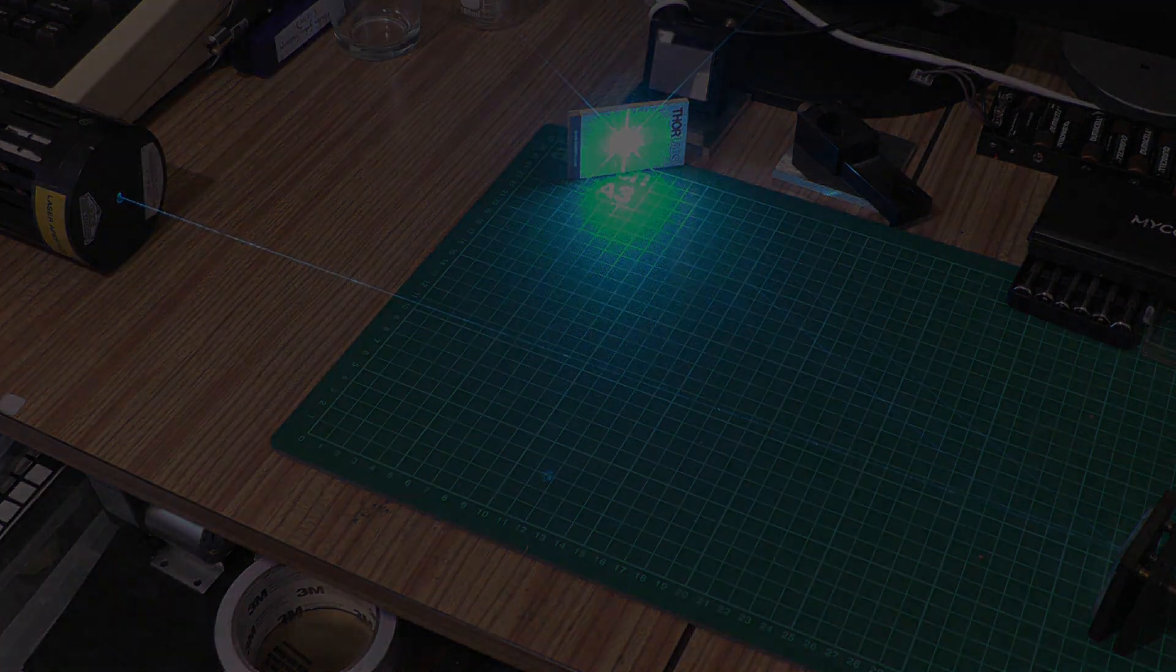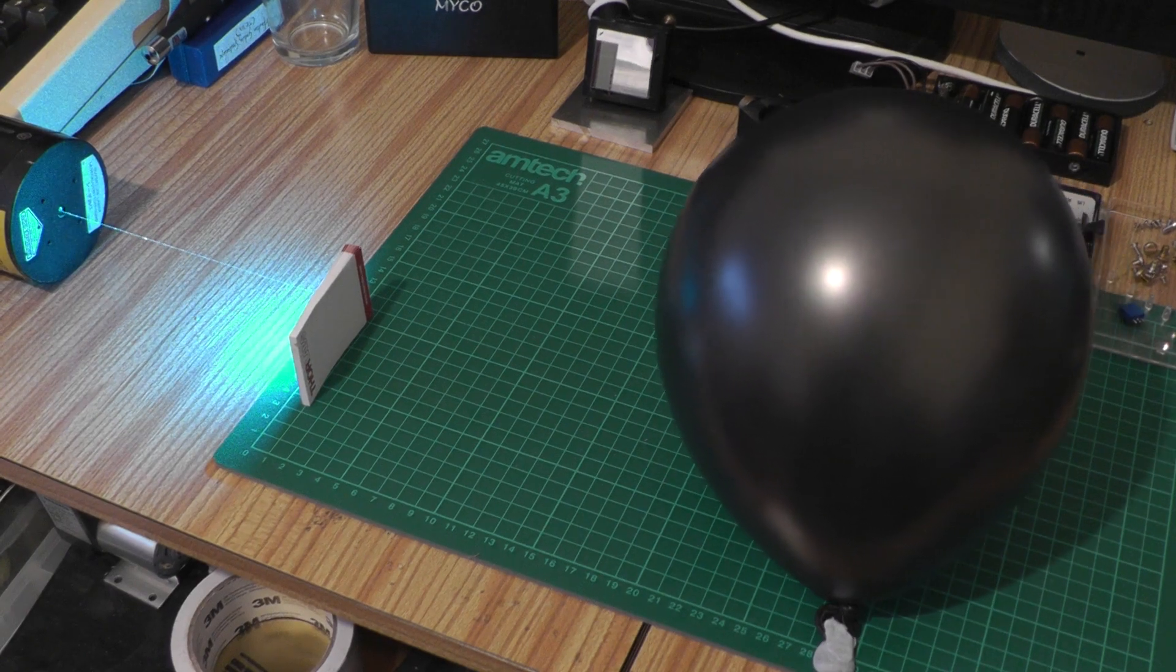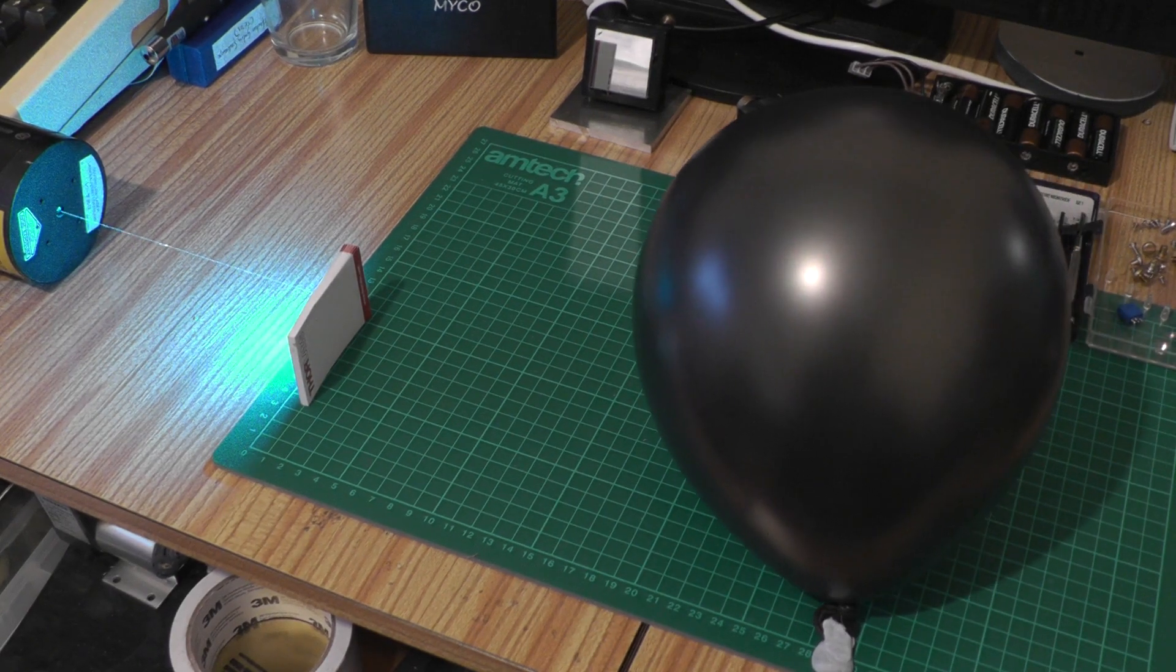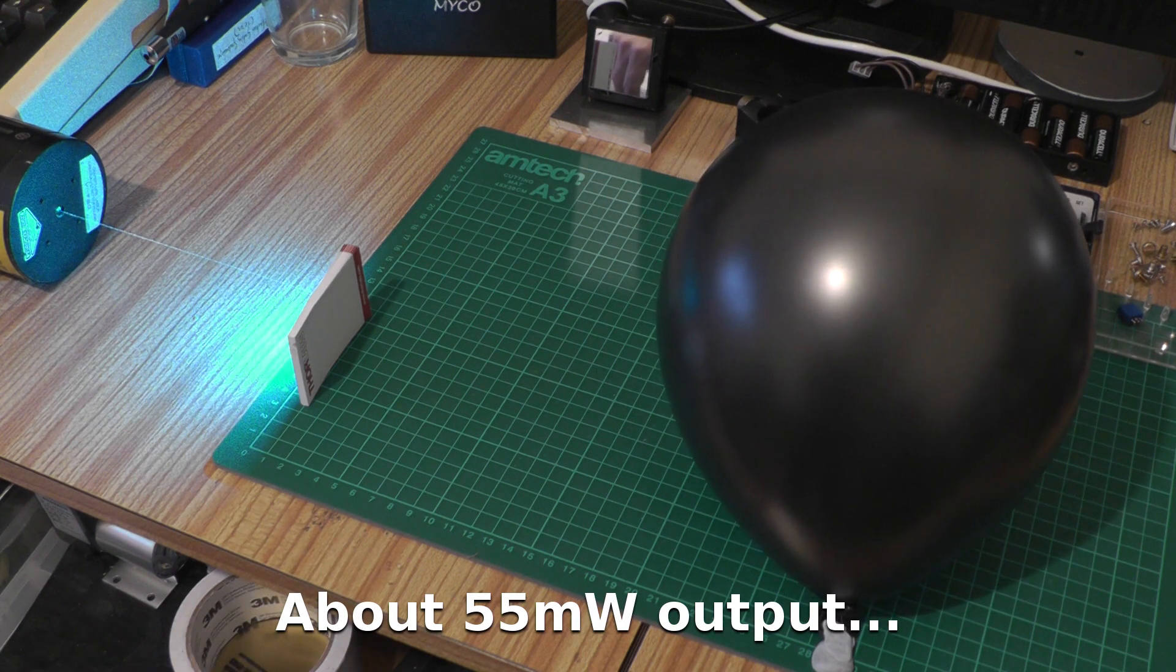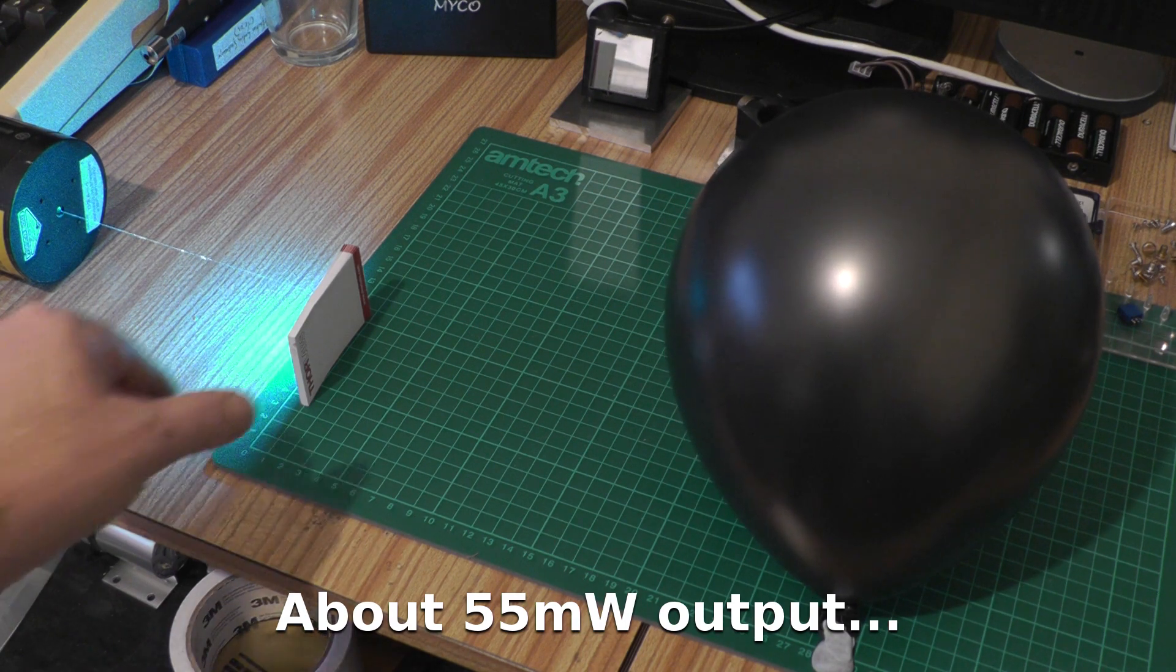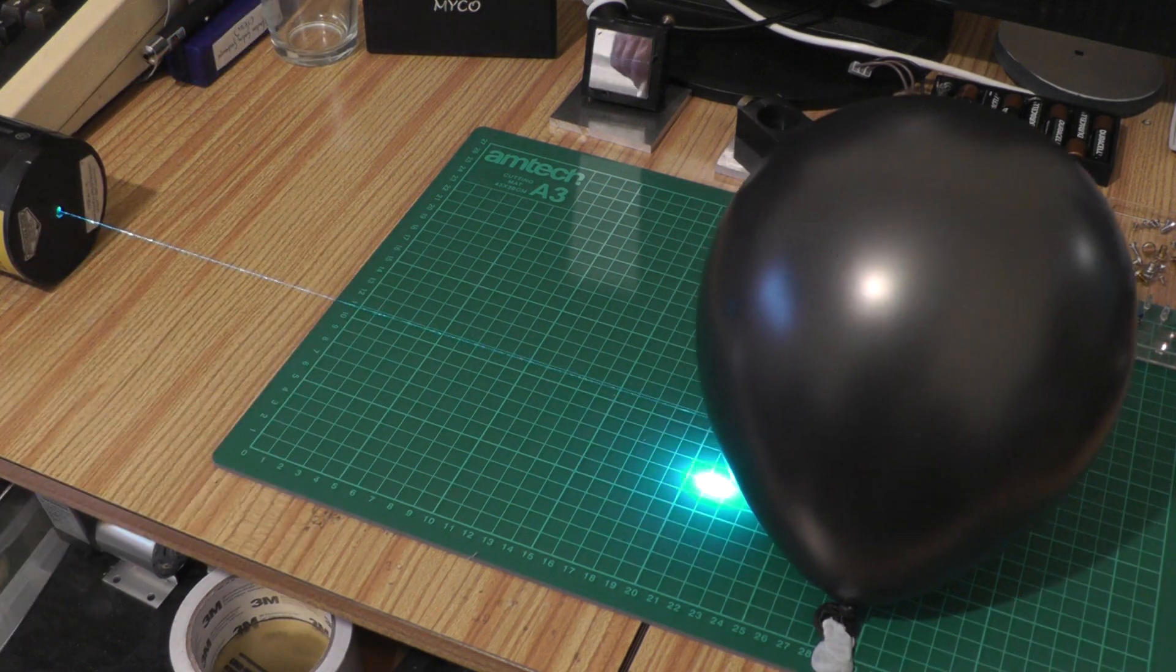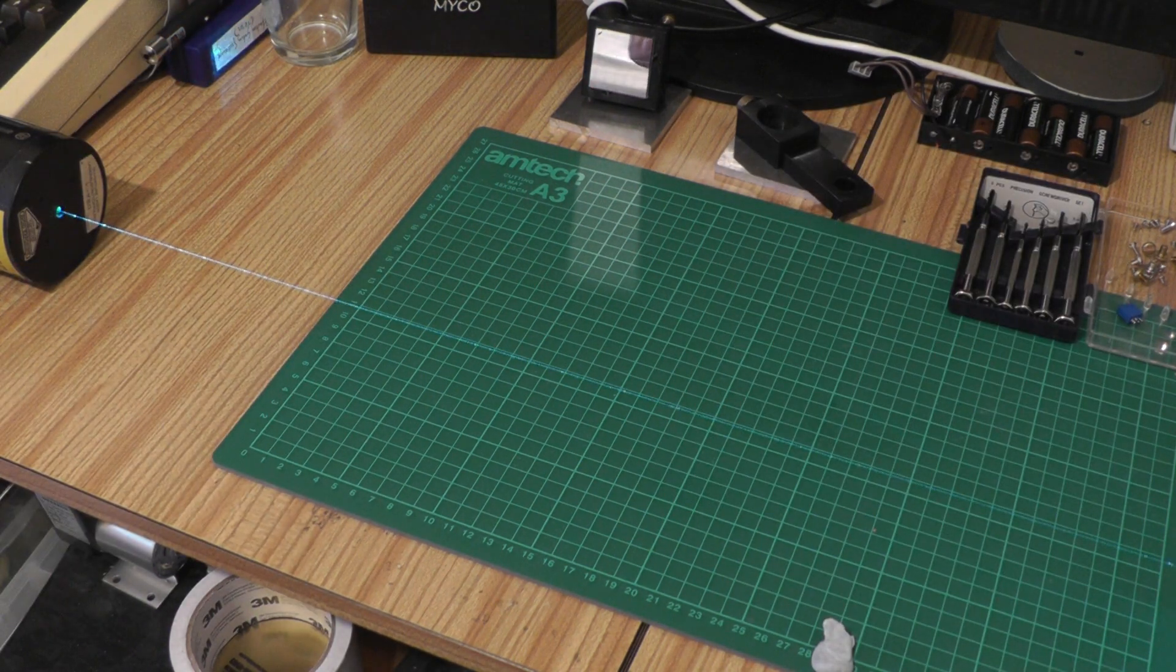Really bright output. So we're running at about eight and a half amps tube current here. I've put a block in front of the beam and I've put a dark colored balloon on the bench so we'll see if we can pop it. Awesome.